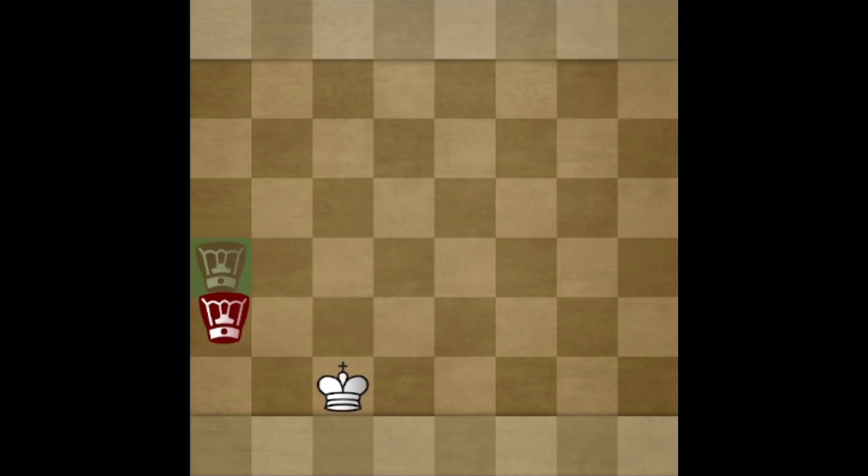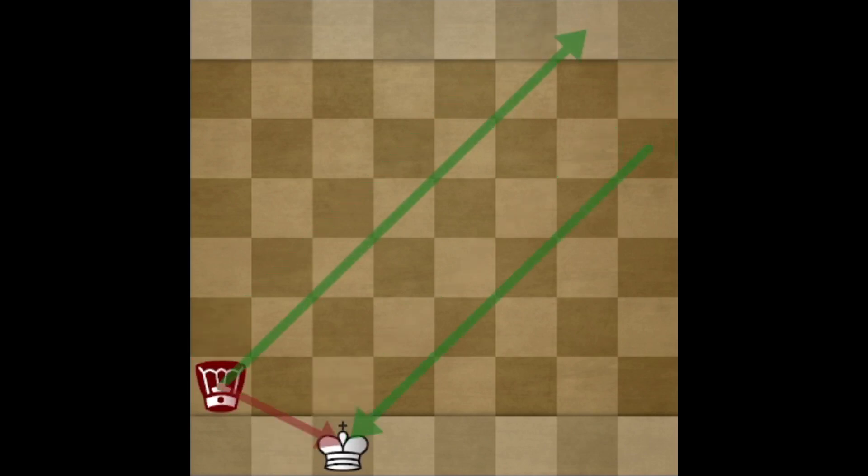For example if you move both kings one square down and look at those diagonals still white is winning on both sides and if you go one square further now red is winning on both sides.